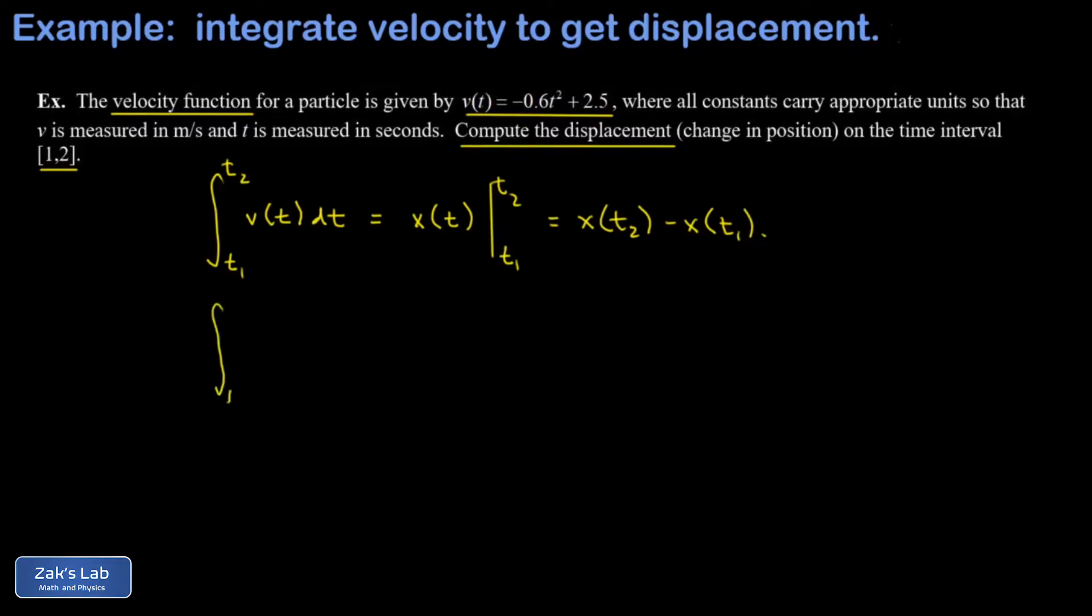We'll put this into practice on the time interval one to two with the specific velocity function negative 0.6t squared plus 2.5 dt.